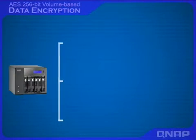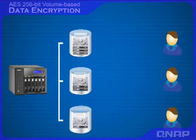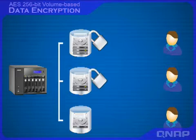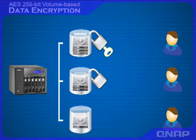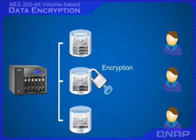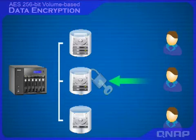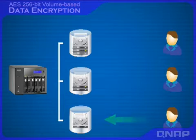The TS639 Pro supports AES-256 volume-based encryption. Disk data are protected by an encryption key; to access the encrypted disk, you need to unlock it with an encryption password or encryption key. You don't have to worry about data leakage if the hard drive or NAS is stolen. The encryption key can be saved on the NAS to unlock the encrypted disk automatically during system startup. You can also choose not to encrypt a disk volume.